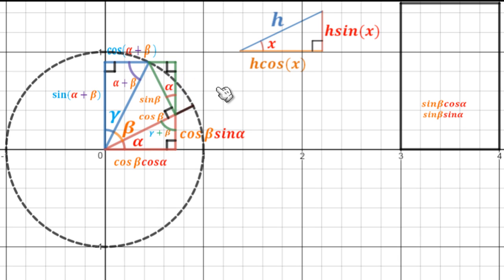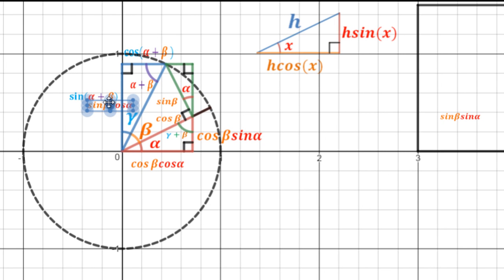Now we can label the sides of this green triangle. The hypotenuse is sine beta. So the adjacent is just going to be sine beta cos alpha, and the opposite side is going to be sine beta sine alpha.